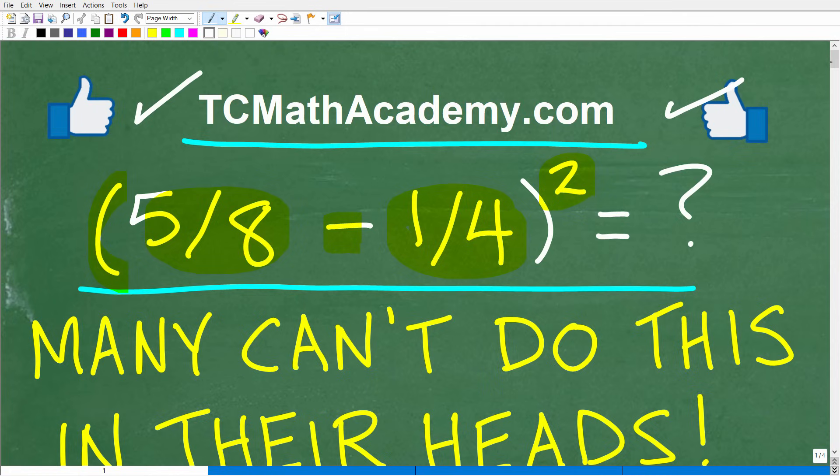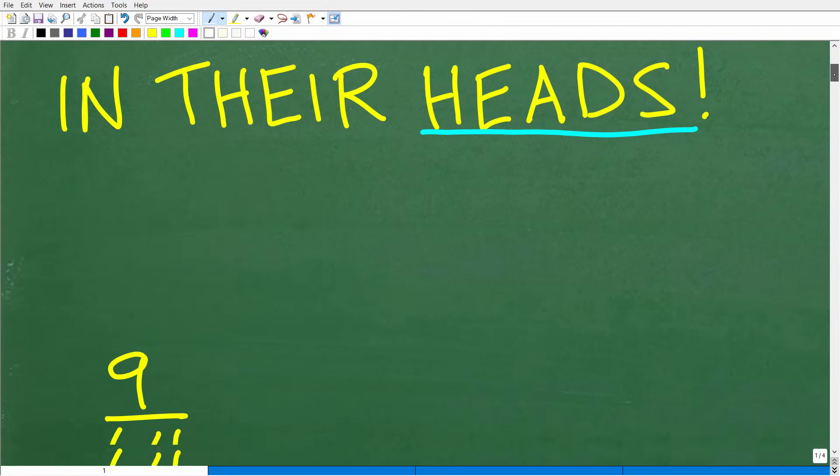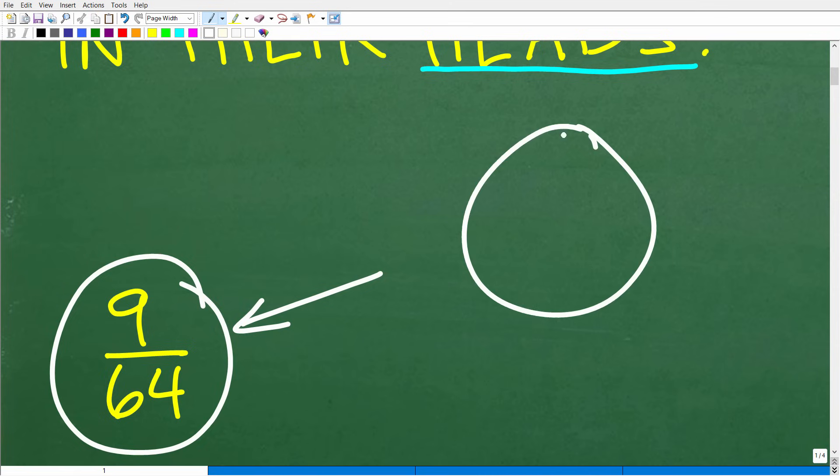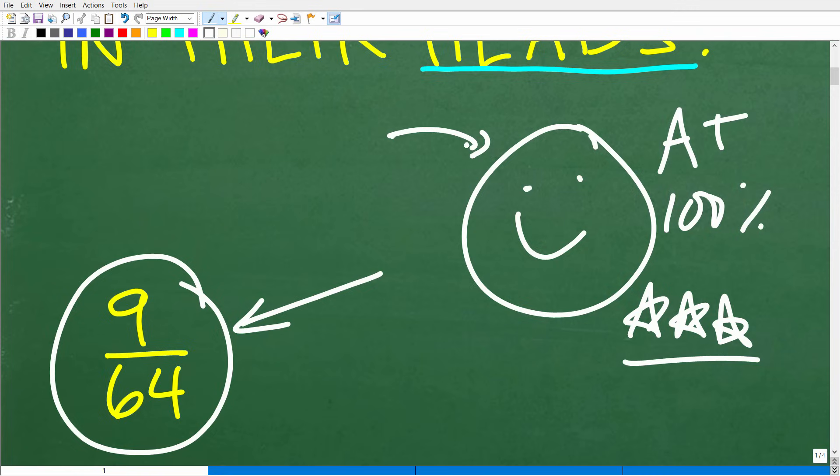Alright, so let's see the correct answer. The correct answer is nine over 64. So how'd you do? Well, if you got this right, we have to celebrate by giving you a nice little happy face and A plus, 100% and multiple stars. So you can brag to your friends and family that you are a professional certified expert in the area of doing mental calculations.